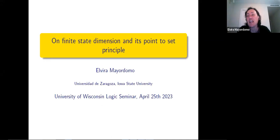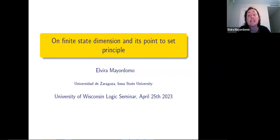I wish it was in person, but we have to take advantage of these Zoom meetings and be able to both speak and listen to interesting talks. What I'm going to be talking about today is finite state dimension, which is a kind of effective dimension that works differently from higher resource-bound dimension concepts such as effective dimension, Schnorr dimension, etc. I'd like to show you the differences and get a bit of intuition of what these differences can mean for us.